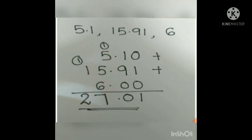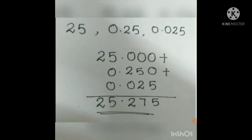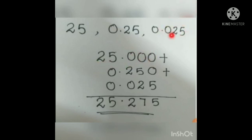Then normal addition: 0 plus 1 is 1, 9 plus 1 is 10 — write 0, carry 1. Then 5 plus 5 is 10, plus 1 is 11 — write 1, carry 1. Then 6 plus 1 is 7, carry 1 again, giving 1 and 2. So the key point: when you have a whole number, write it properly with a decimal point — for example, 6 can be written as 6.00. Another example: 25, 0.25, 0.025 — here 25 is a whole number, so write it as 25.000, giving 25.275 as the sum.